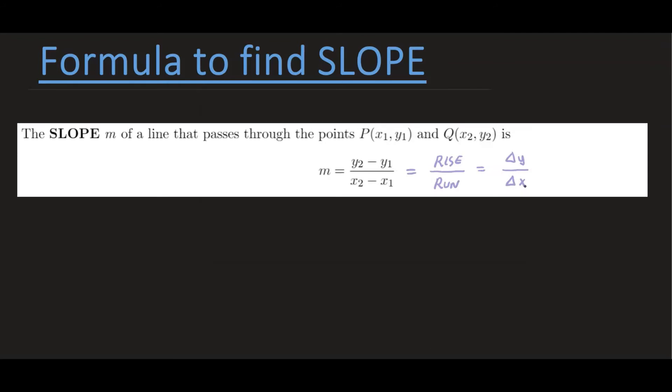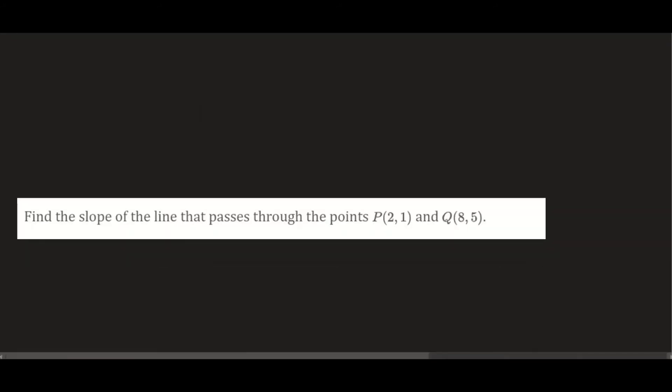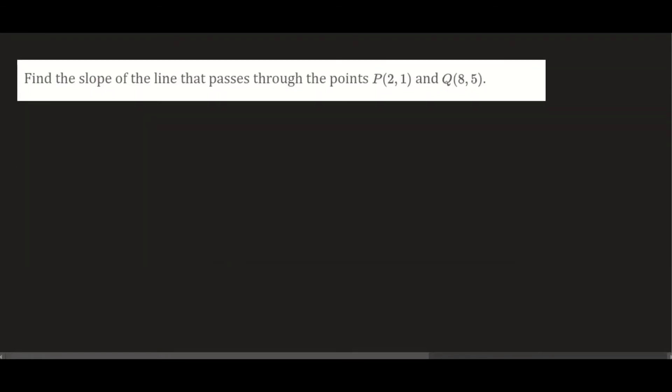So now let's look at an example. Take a look at this problem. We want to find the slope of the line that passes through the points P and Q. So let's label these points P as x1, y1, and Q as x2, y2.